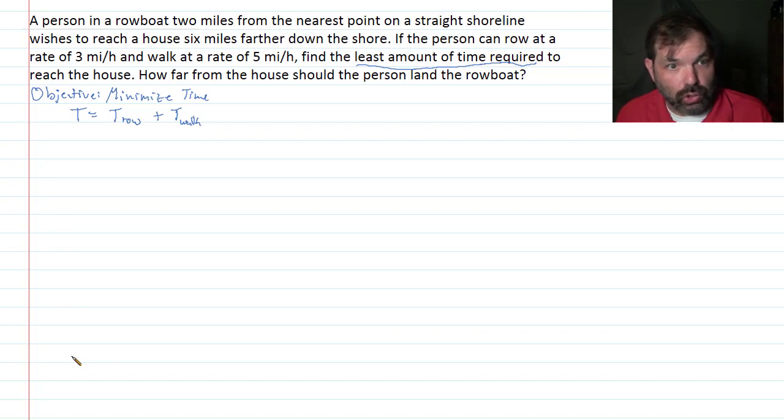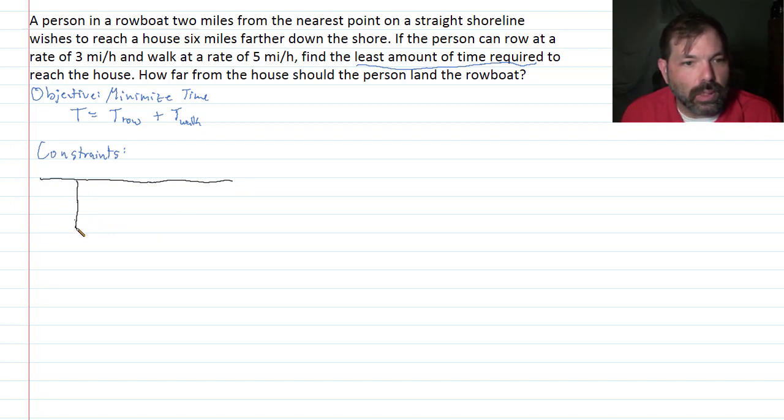Let's look at the constraints. The constraints is not exactly clear right now. Let's see what we can do, a diagram. A person in a rowboat. So let's draw, here's my straight shoreline, relatively straight shoreline. I have a rowboat that is two miles from shore. So I'm starting here, I'm two miles from shore to begin with.